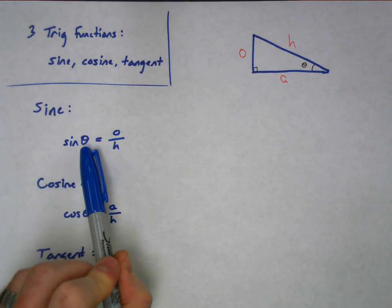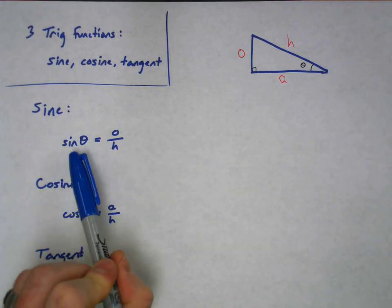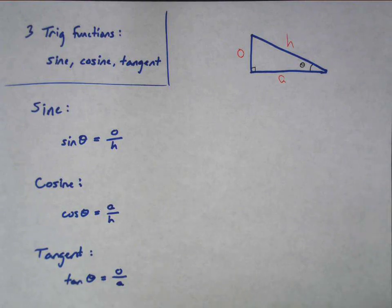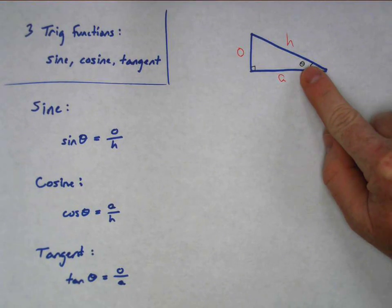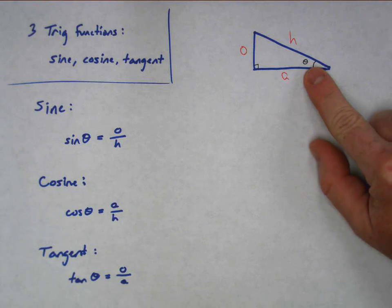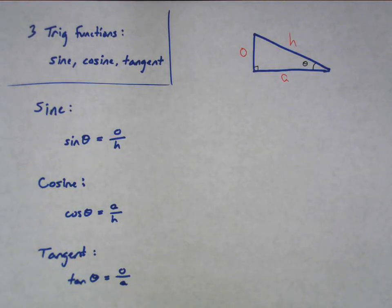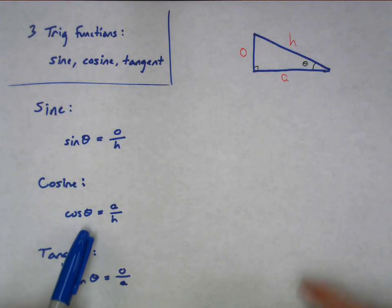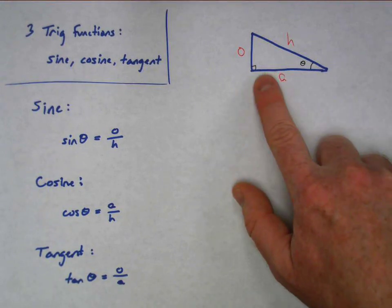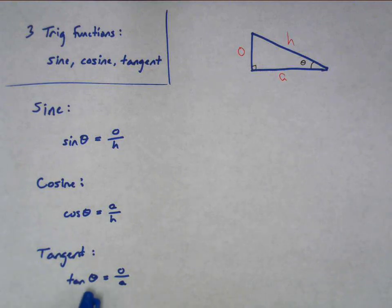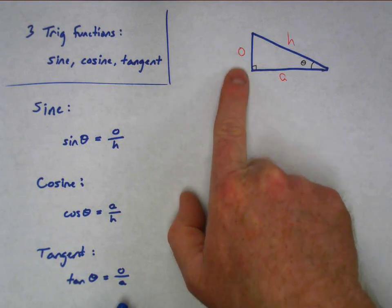What these three trig functions do for us is set up ratios of the sides. If we take the sine of angle theta, that sine of the angle is equal to the ratio of the opposite side to the hypotenuse. The angle is usually measured in degrees. The cosine function — cosine of angle theta — is equal to the adjacent side divided by the hypotenuse. The tangent function — tangent of theta — is equal to the opposite over the adjacent, the ratio of the opposite side to the adjacent side.